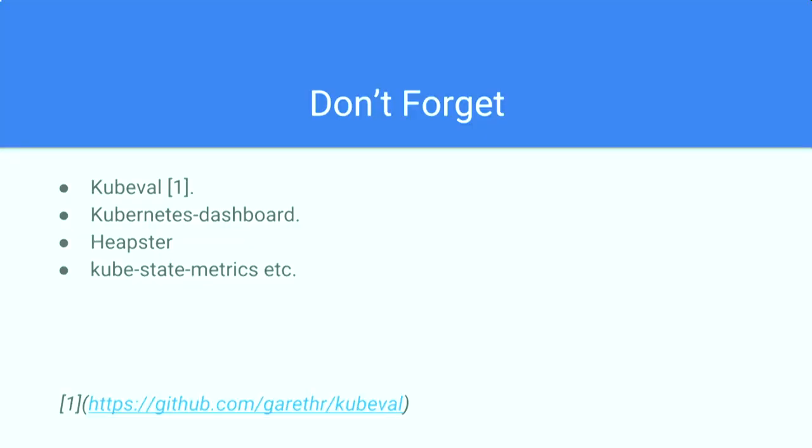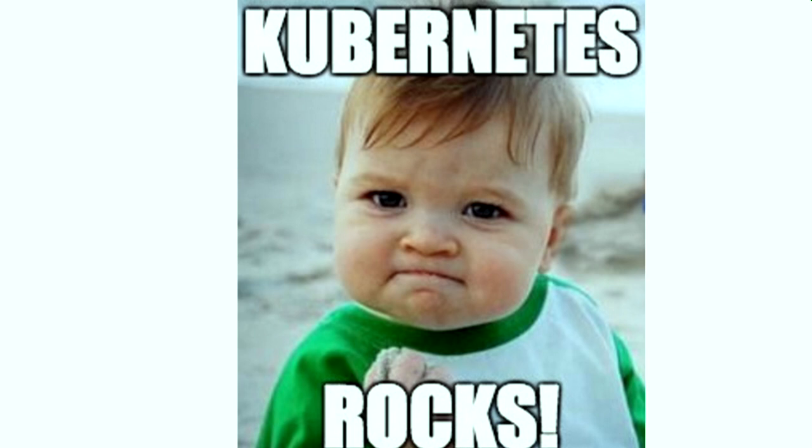Some useful tools when deploying Kubernetes: kube-eval is a validation tool for your YAML templates. The Kubernetes dashboard lets you view your cluster. Heapster and kube-state-metrics let you check pod resource consumption. We have been running Kubernetes in production for months — yes, sometimes things don't work, but the community is awesome. Kubernetes really rocks, and we have simplified our deployment process, reducing both cost and deployment time.